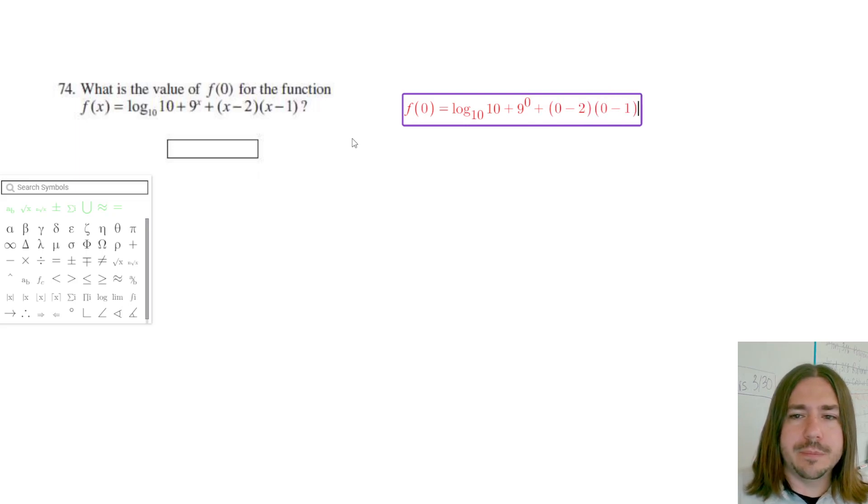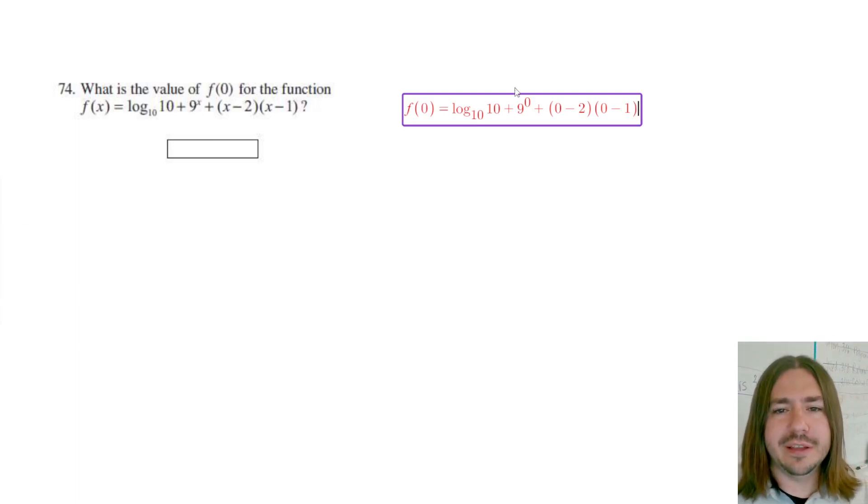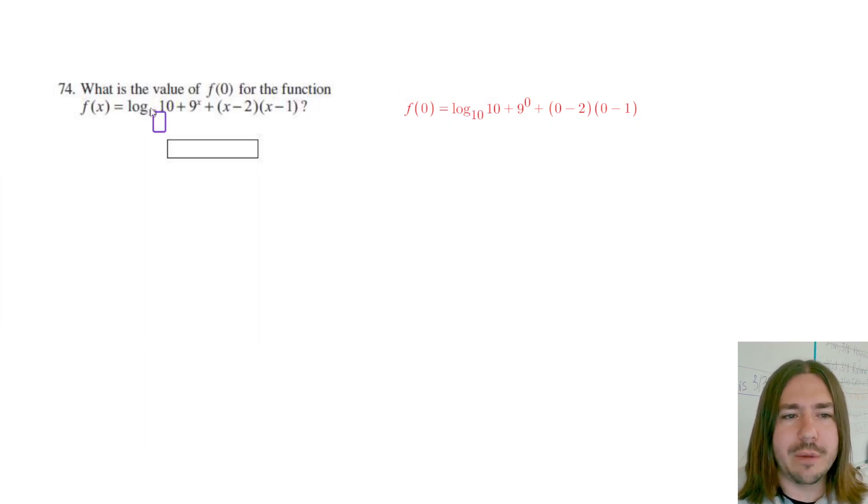When this is log base 10, if your scientific calculator doesn't let you type in the base, all is not lost. Log base 10 is equivalent to just writing log. So if you see log without a number here, without a base, it's assumed to be 10. It's actually kind of unconventional that they would write a 10 here at all. Your calculator should have a log button that just says log, you can just use that. Just type in log 10.